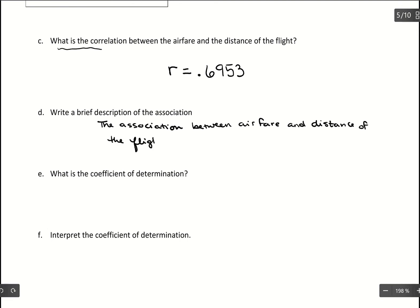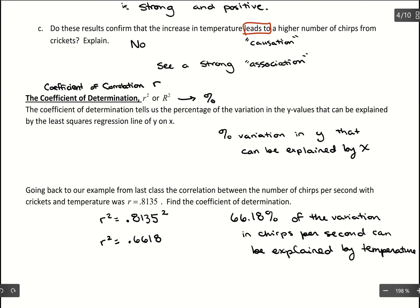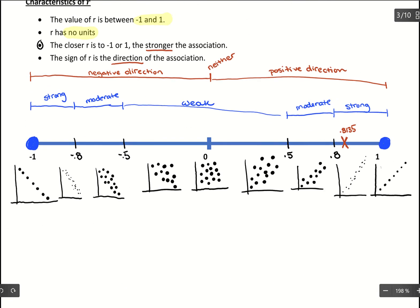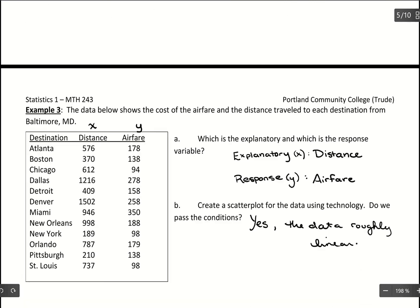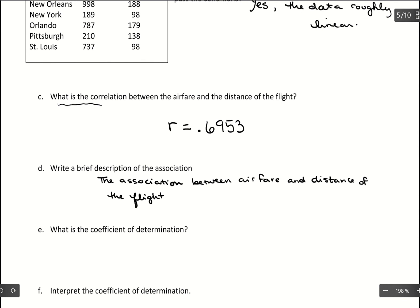And then with this, we need to go back to that number line. So let's take this 0.6953 and let's go back to our number line of negative one to positive one. Now 0.6953, that is landing in here. And there's 0.6953. So with that, what we're getting out is a moderate strength and a positive direction. So that's what we want to use to describe the association.